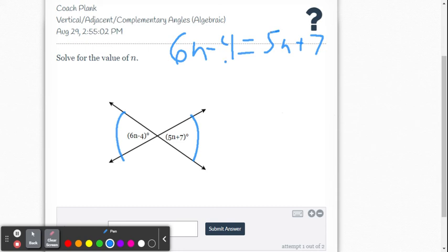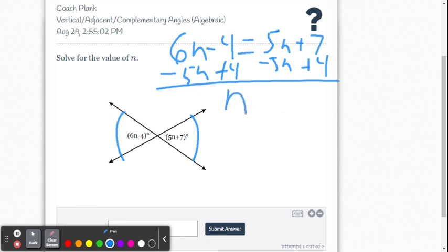So let's move the number to the right side, so we're going to add 4 to both sides. And then I want the variable N on the left, so let's move that 5N by subtracting 5N from both sides. If you want to do those one step at a time, you can. I'm just doing both steps. So then what we get is 1N on the left equals 7 plus 4 is 11. So N equals 11.